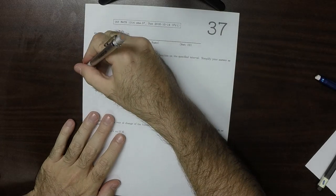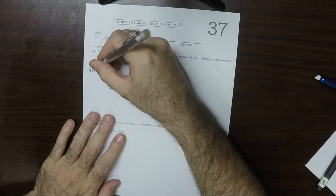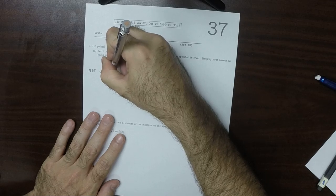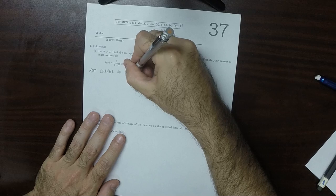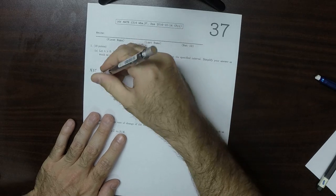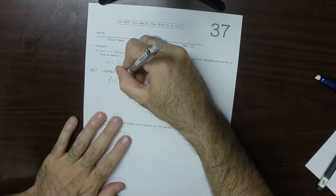As a reminder of the definitions of these things, the net change of F on an interval A to B is F(B) minus F(A).